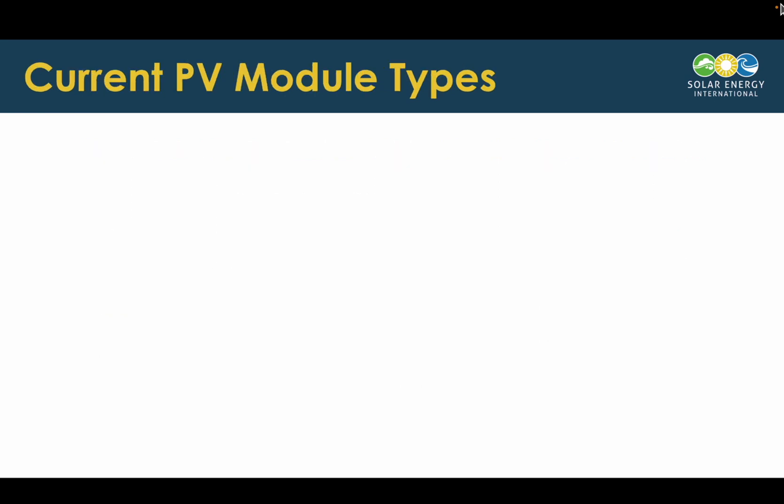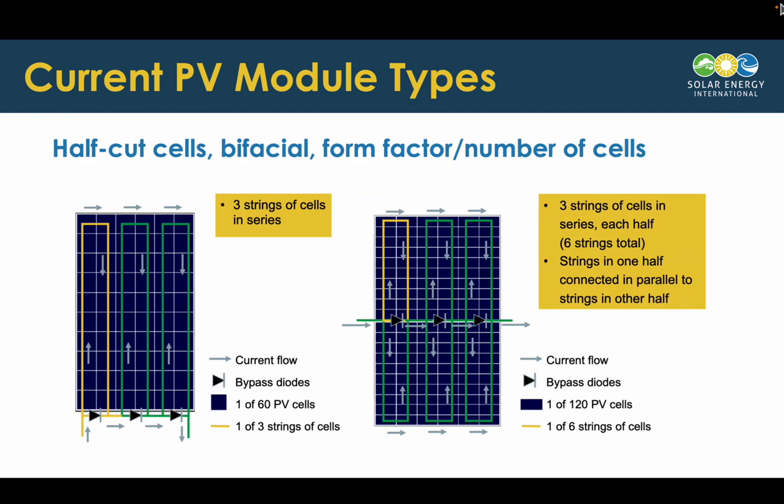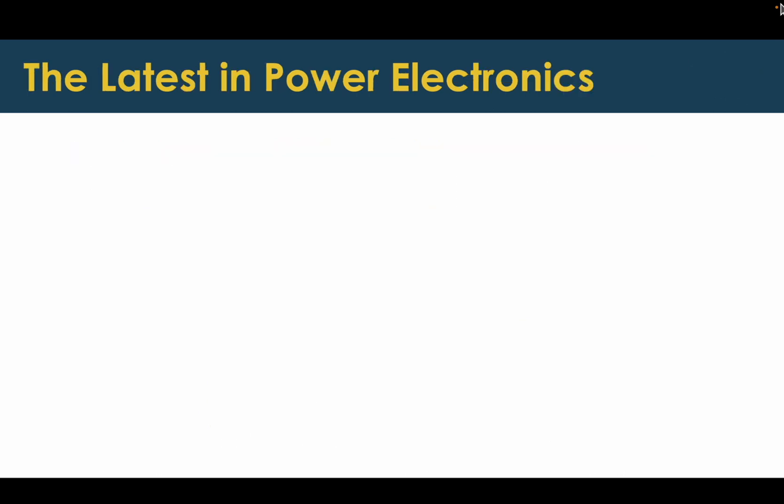We want to make sure we're using the current types of PV modules that are out there, things like half-cut cells, bifacial modules, modules with different numbers of cells compared to what we've historically seen. This way you'll know what's current and what you can actually purchase and install.